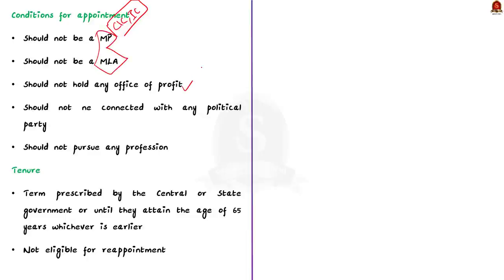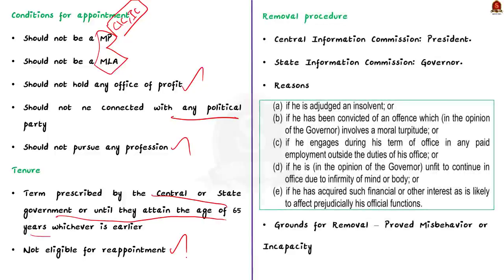Similarly, in case of State Information Commissioners, they are appointed by the Governor on the recommendation of a committee consisting of the Chief Minister, Leader of Opposition in the Legislative Assembly (if any), and the state cabinet minister nominated by the Chief Minister. The Chief Information Commissioner and Information Commissioners should not be an MP or MLA, should not hold any office of profit, or be connected with any political party or practising any profession. They hold office for such term prescribed by the Central or State Government, or until they attain the age of 65 years, whichever is earlier, and are not eligible for reappointment.